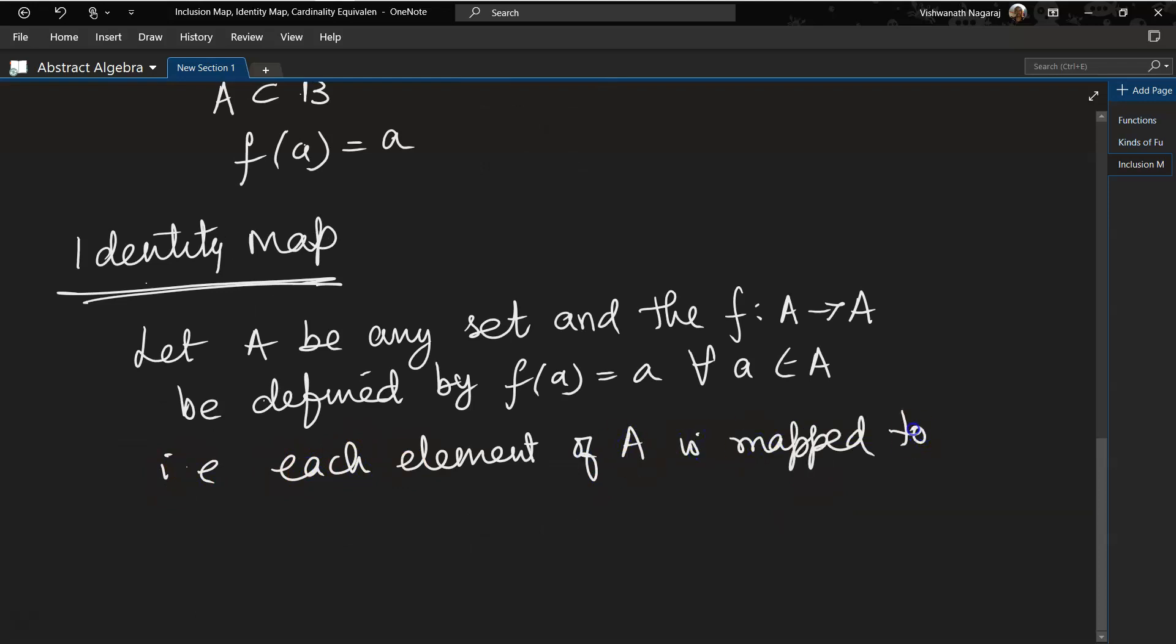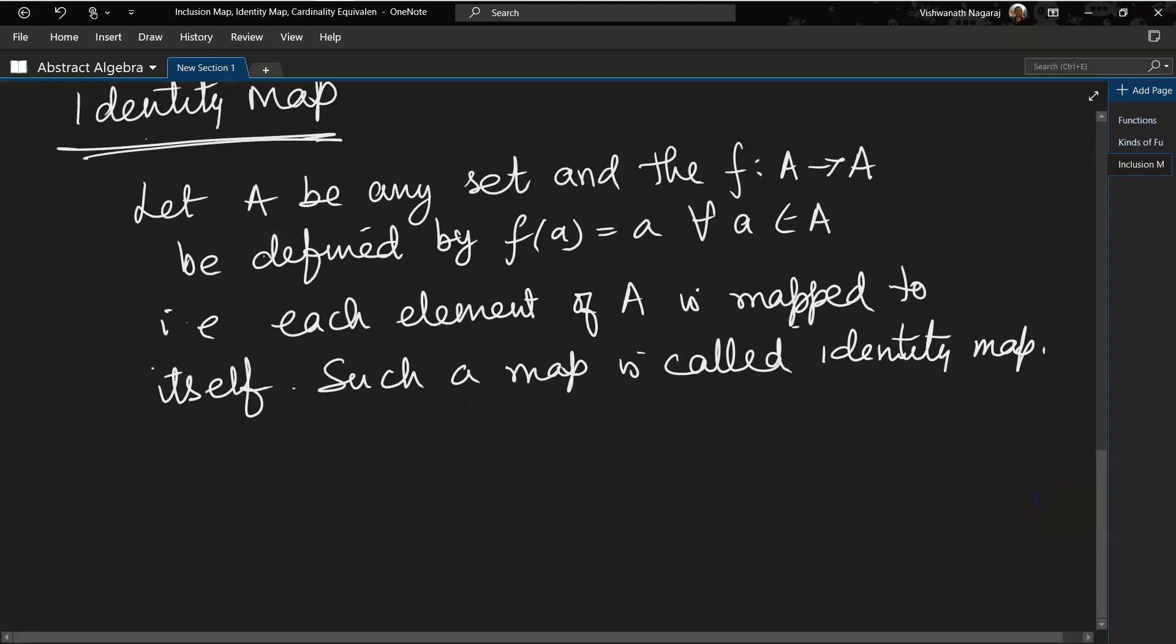by f(a) equals a for all a belonging to set A, that is, each element of A is mapped to itself. Such a map is called identity map or an identity function.